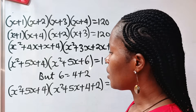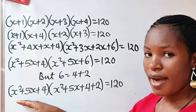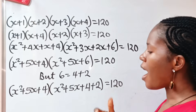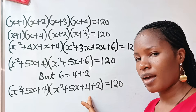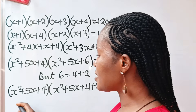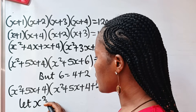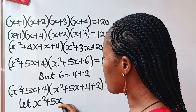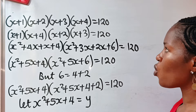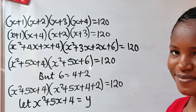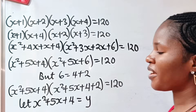Now you can see that x squared plus five x plus four appears in both expressions. So let's let y equal x squared plus five x plus four. We can then write the equation as y multiplied by y plus two, is equal to 120.